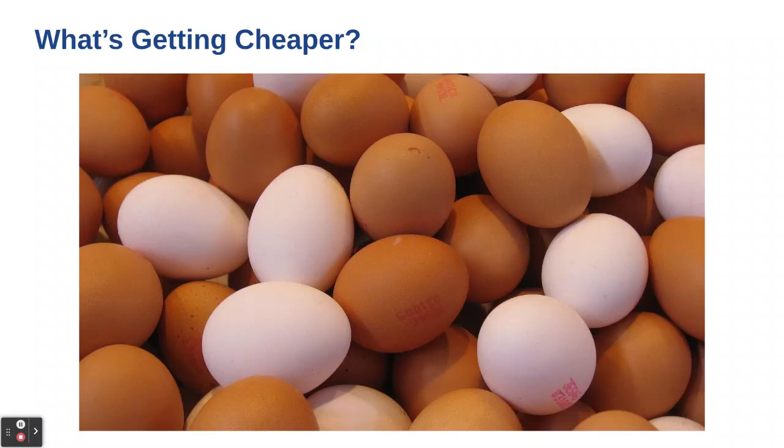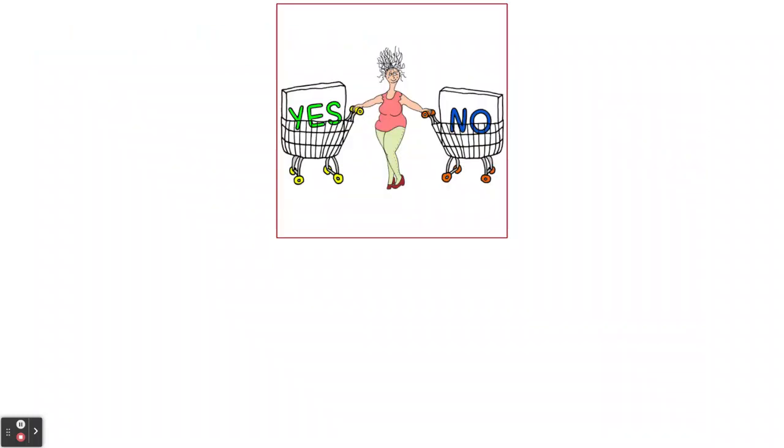We talked about it a lot in the comments section. So this is what the Bureau of Labor Statistics says are some items that are getting cheaper that we might want to say yes to and put in our cart, and some items that are more expensive that we may just want to avoid buying or that we need to look for deals and bargains on. One of the things that we know is true is that grocery prices can vary wildly based on where you live and where you shop.